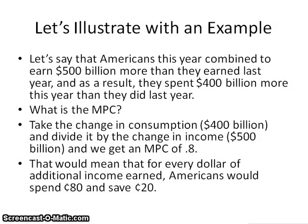Let's illustrate with an example. Let's say that Americans in 2011 combined to earn $500 billion more than they earned last year in 2010, and as a result they spent $400 billion more this year than last year. What is the MPC? We take the change in consumption — $400 billion — and divide it by the change in income — $500 billion — and we get an MPC of 0.8. That means for every dollar of additional income earned, Americans would spend $0.80 and save $0.20. If there are only two things we can do with additional income and we know our MPC, we subtract $0.80 from $1.00 to get $0.20 in savings — and that's also our MPS.